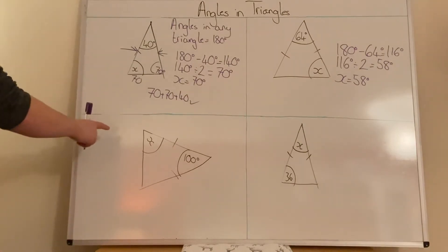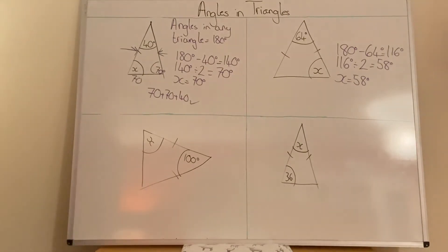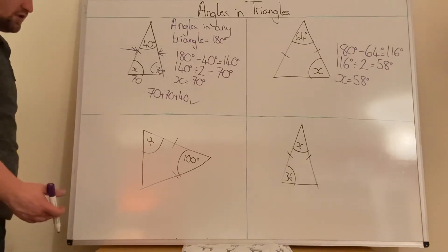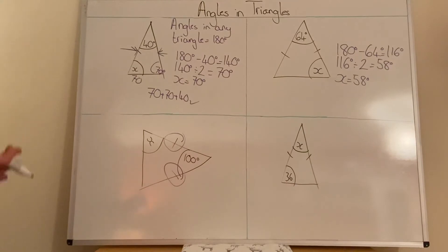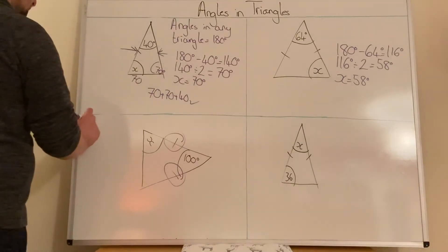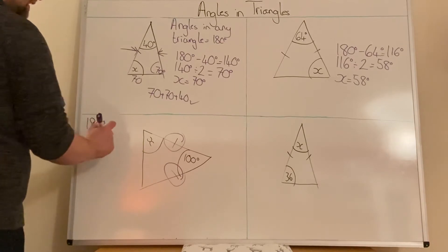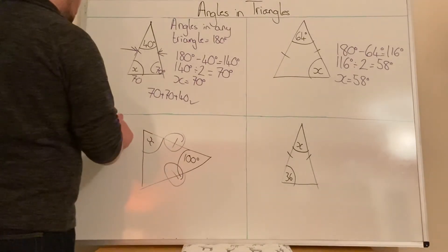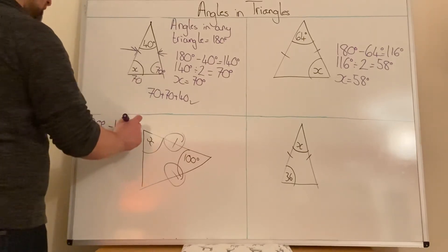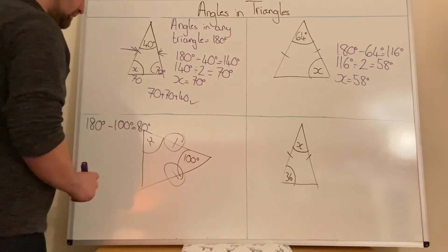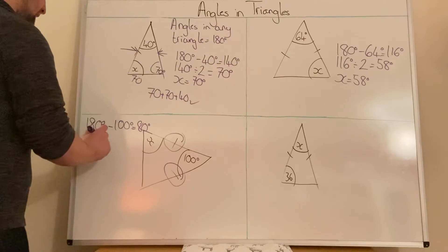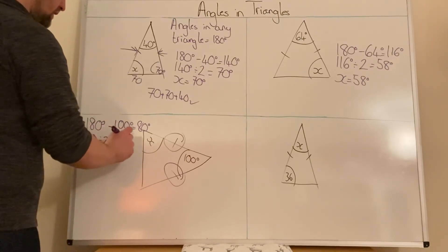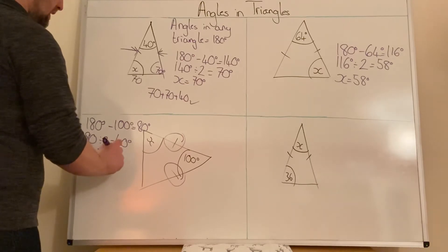Now, is this next one an isosceles triangle? Yes it is — we know because we've got the tick marks there and there, showing the sides are the same and therefore the angles are the same. So we deal with it the same way: 180 degrees minus what we've already been given, which is 100, equals 80 degrees. We then halve it: 80 divided by 2 is 40 degrees. So x equals 40.